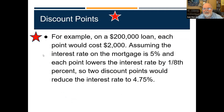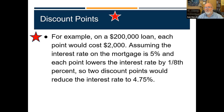If I have a $200,000 loan, one point would cost $2,000. Assuming the interest rate is 5%, and each point lowers the interest rate by one-eighth of a percent, two discount points would reduce the interest rate to 4.75%. That's two-eighths, or 0.25. One-eighth is 0.125, so if we bought two points, it would lower our rate to 4.75% on this $200,000 loan.